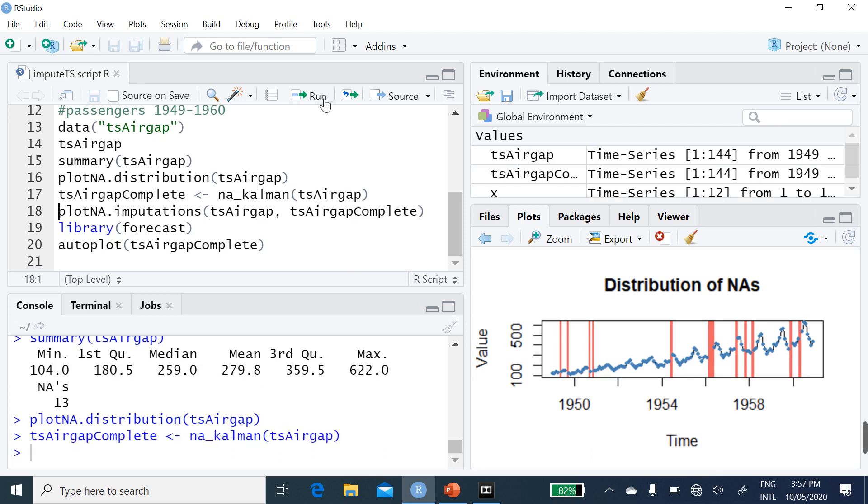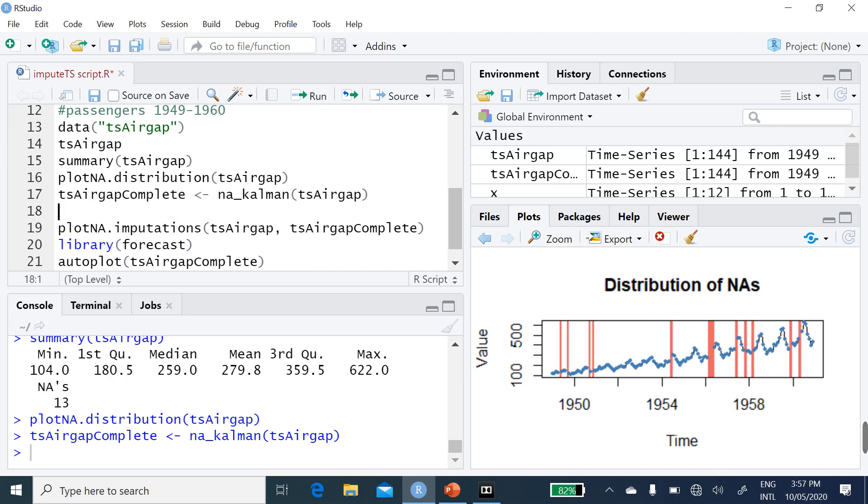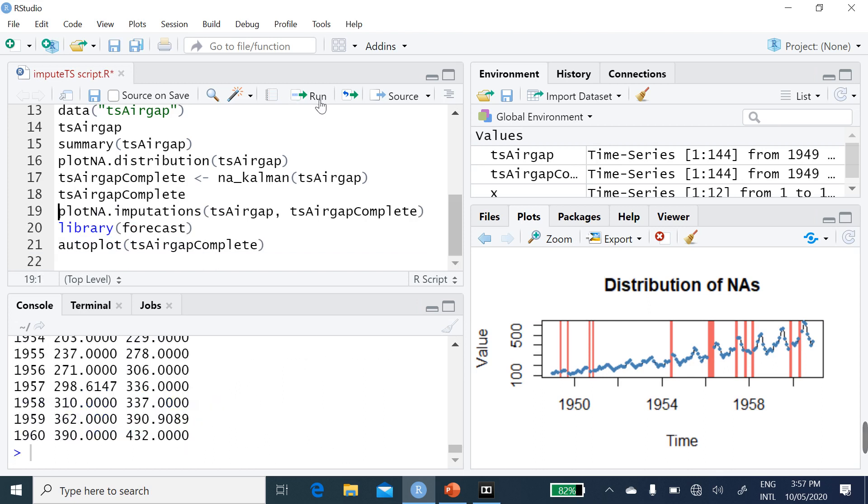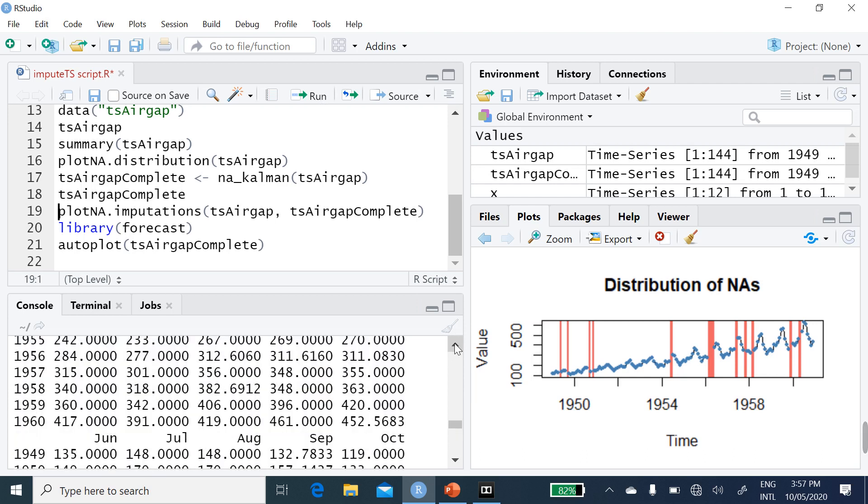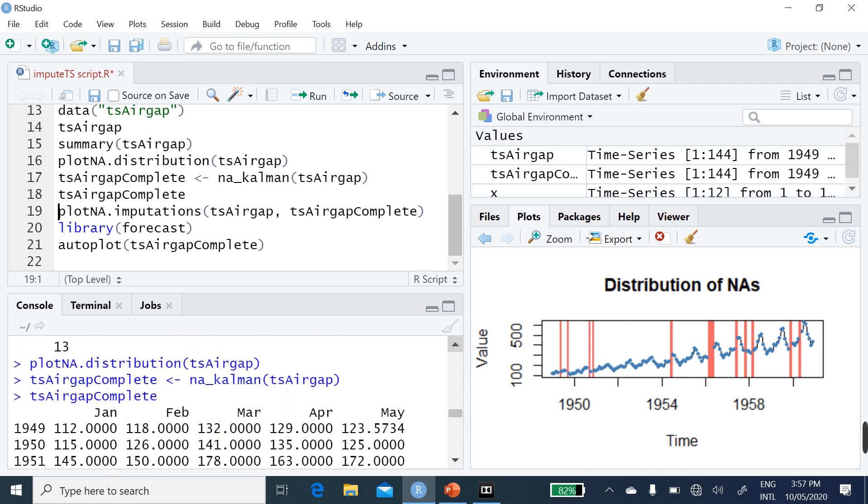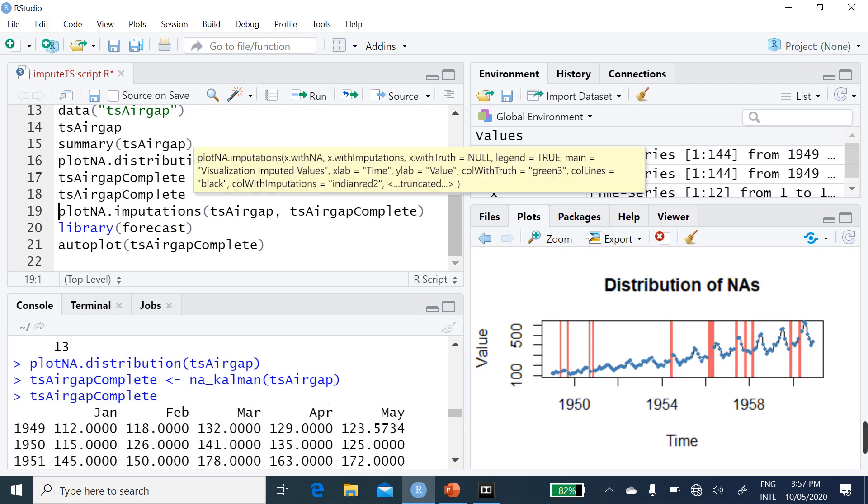Let's run this. The moment we have run it, in case we want to look at the complete data, let's TSairgap complete. So, that's the one we have generated. Let's run this and you will see. Now, you can see there's no NA again. This is what we are seeing. No more NA at all. All of them have been replaced.